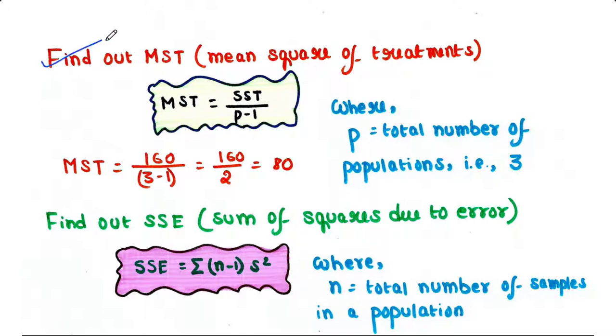Now let's find out MST, that is the mean square of treatments. The formula to find out MST is SST divided by P minus 1, where P is the total number of populations, that is 3. We have SST already found, that is 160, and P is 3, so 3 minus 1 is equal to 2. So 160 by 2 is equal to 80.